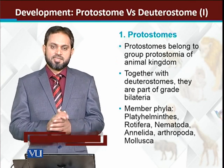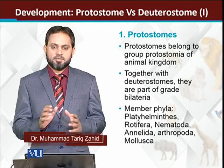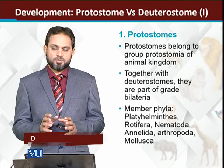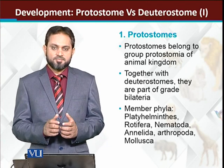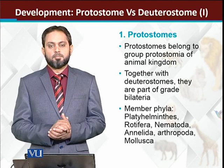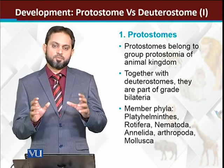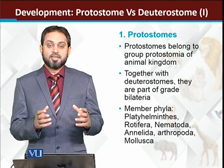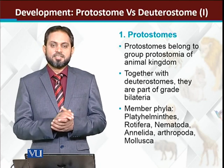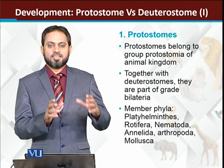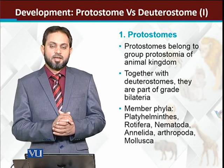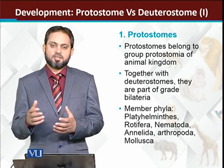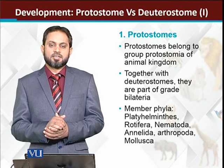So first the protostomes. Let me discuss the whole animal kingdom. Normally the animals are divided into two major groups. The first one is the grade Radiata and the other one is the grade Bilateria. Animal kingdom کو ہم دو بڑے groups میں divide کرتے ہیں — ایک وہ grade ہے جس کے اندر radial symmetry پائی جاتی ہے، جن کو grade Radiata کہتے ہیں، and the other group which has bilateral symmetry belongs to grade Bilateria.